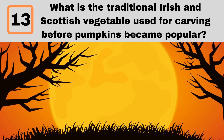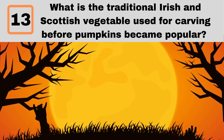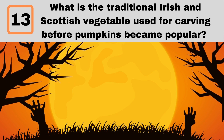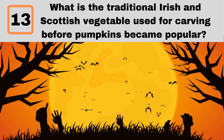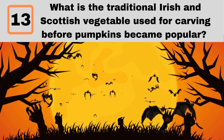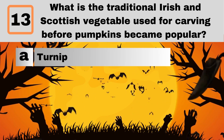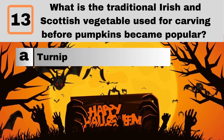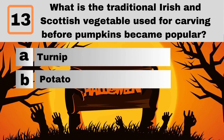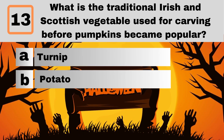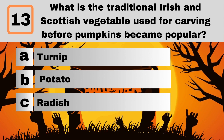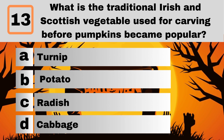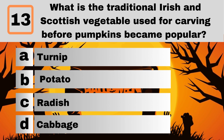Question 13. What is the traditional Irish and Scottish vegetable used for carving before pumpkins became popular? A. Turnip. B. Potato. C. Radish. D. Cabbage.